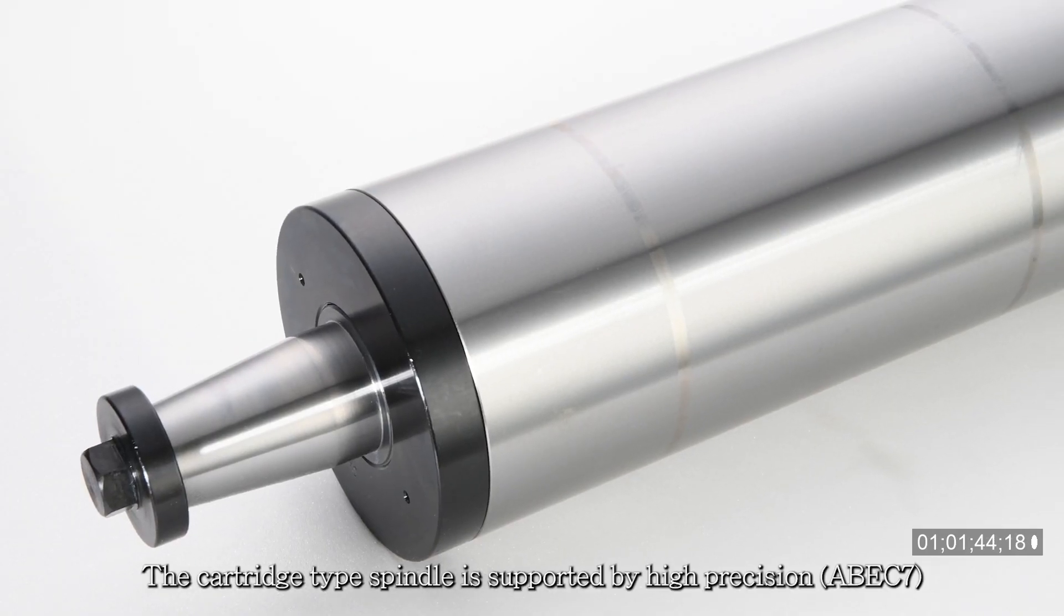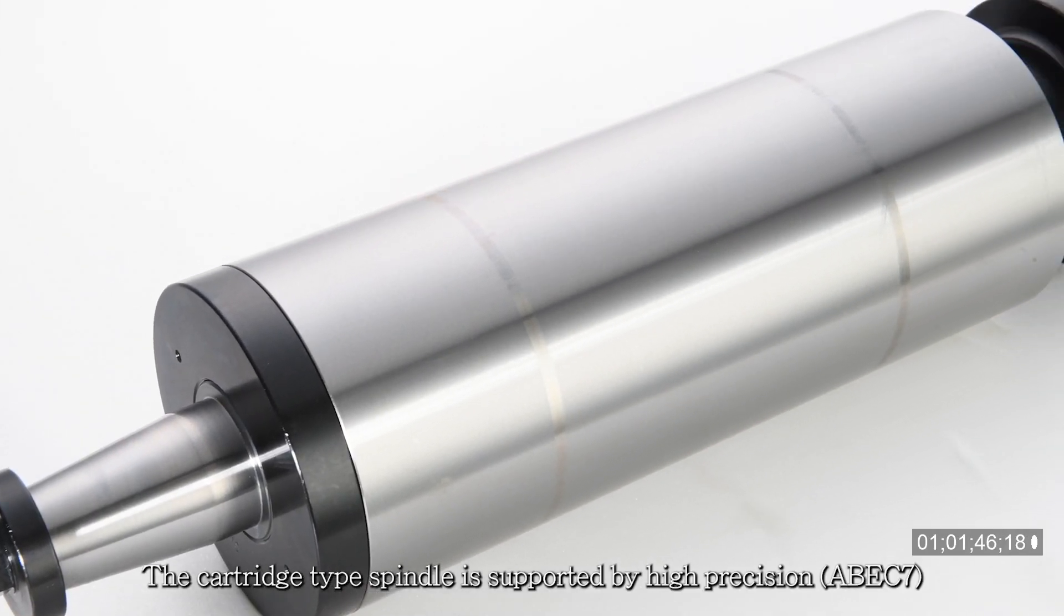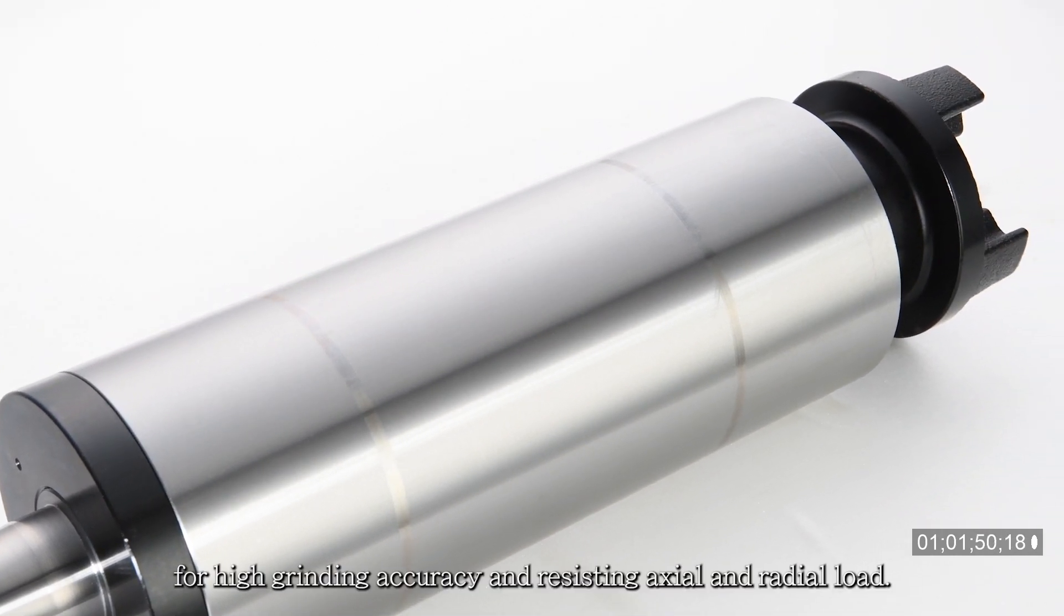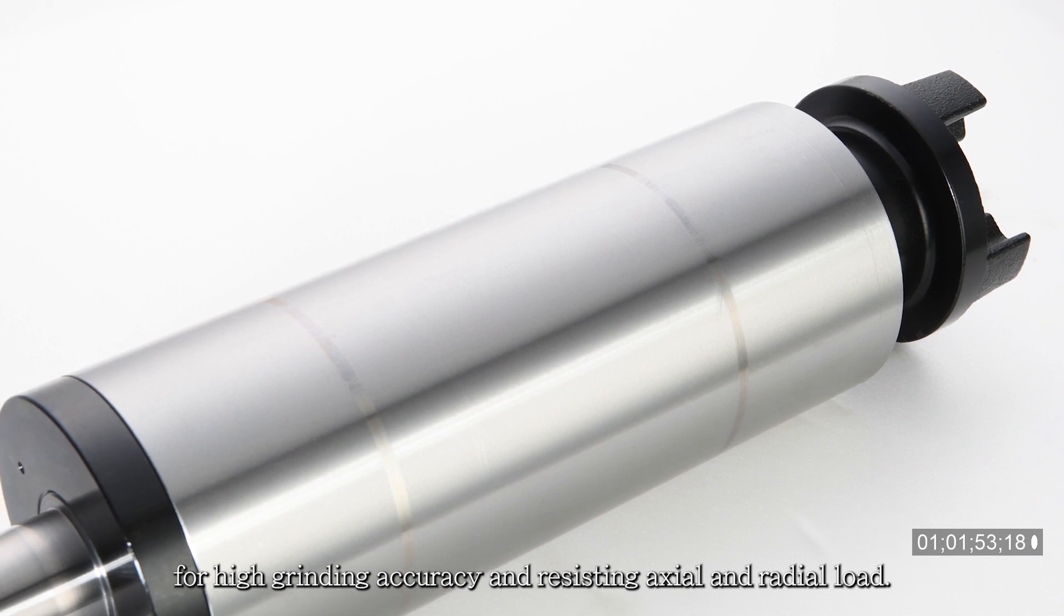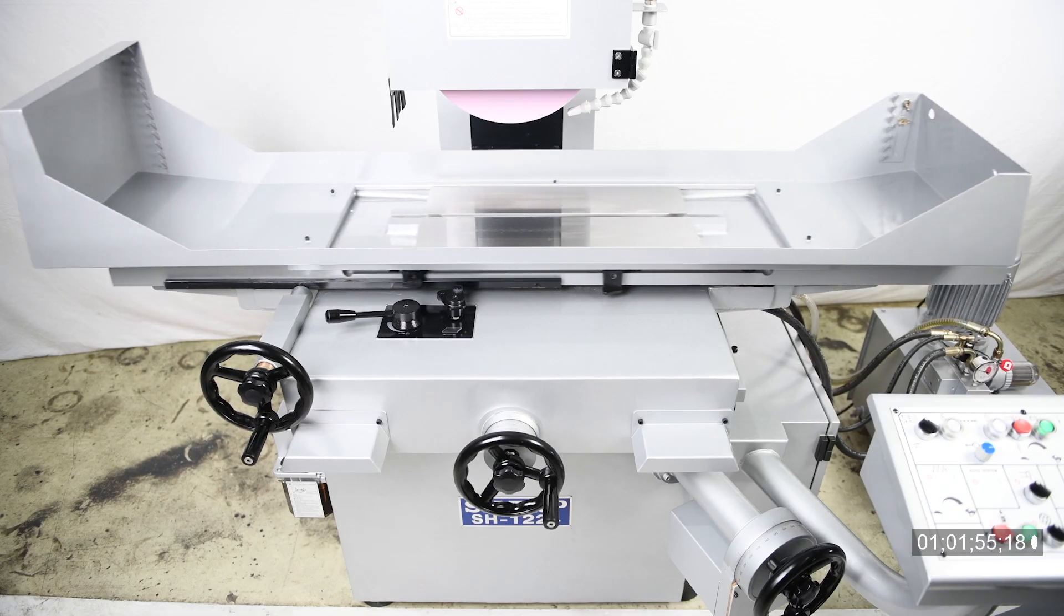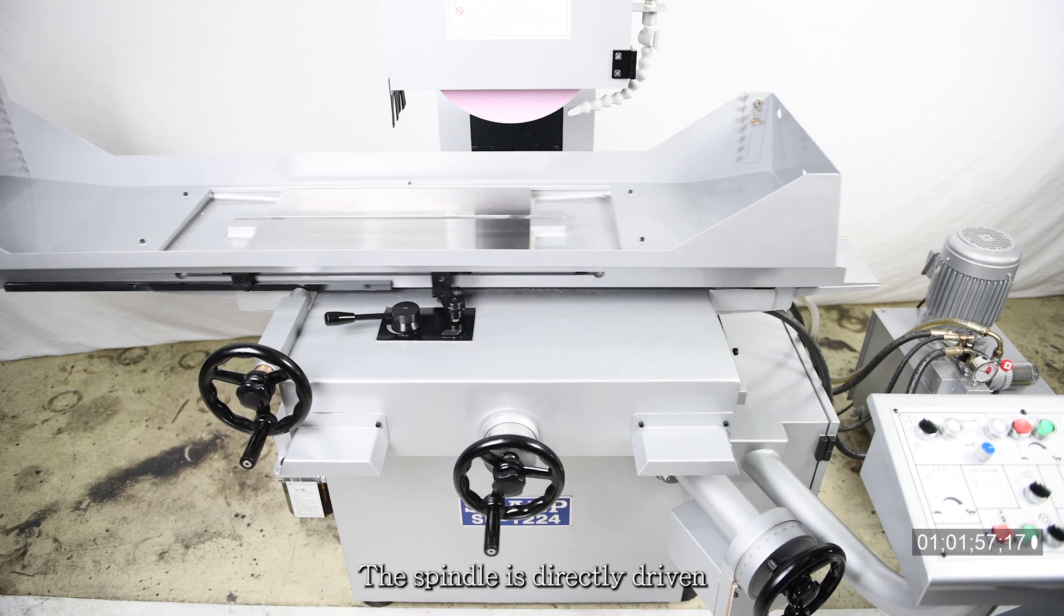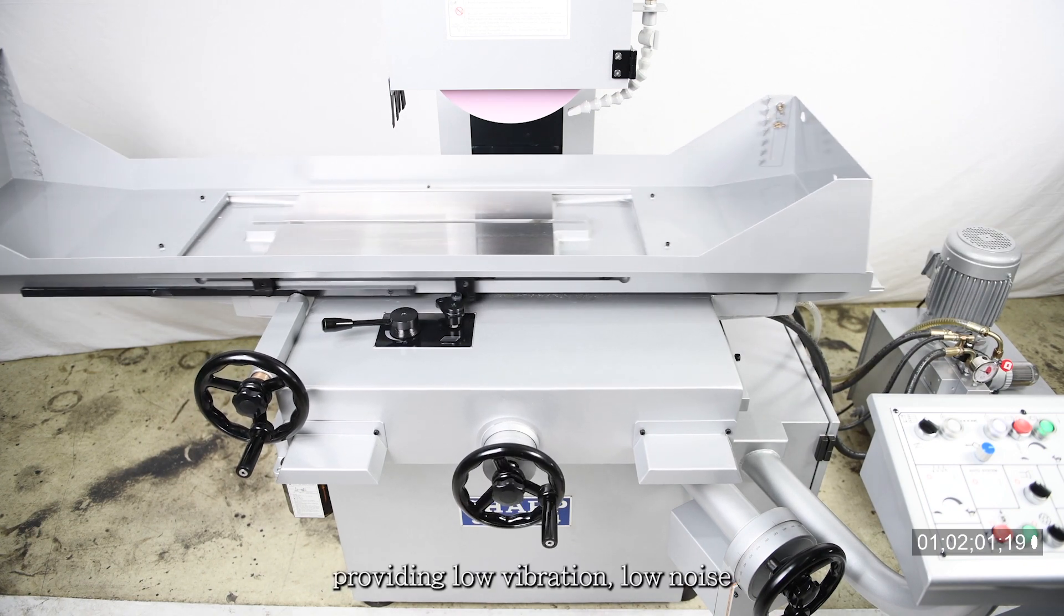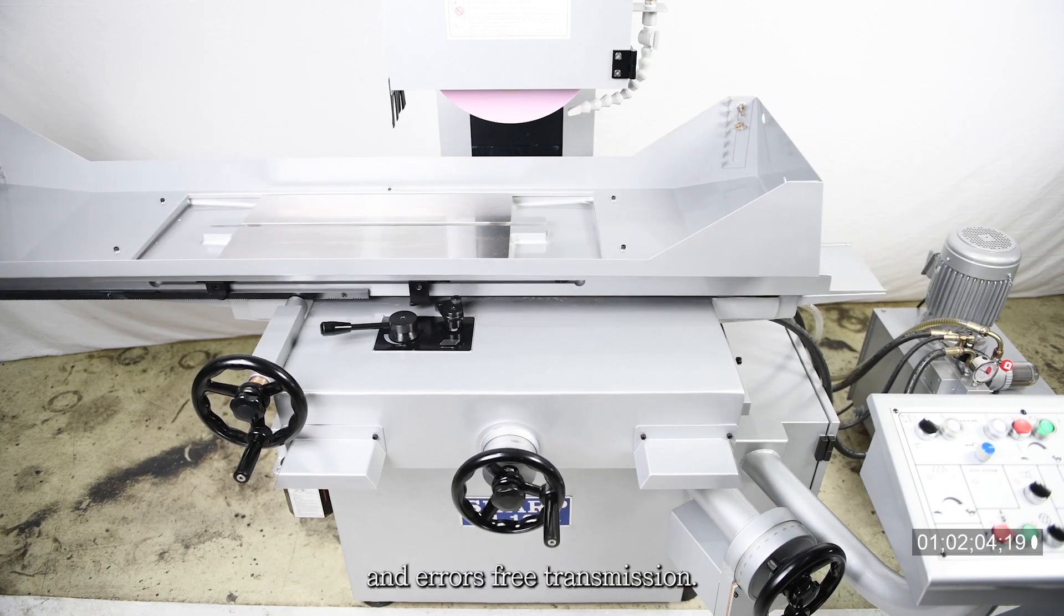The cartridge type spindle is supported by high precision ABEC-7 pre-loaded angular contact bearings for high grinding accuracy and resisting axial and radial load. The spindle is directly driven by a V3 vibration class motor, providing low vibration, low noise, minimal debris, and error-free transmission.